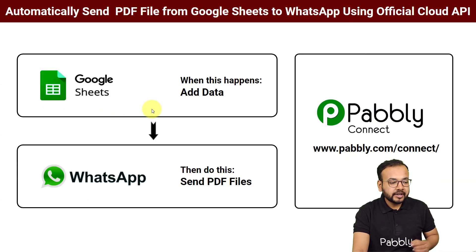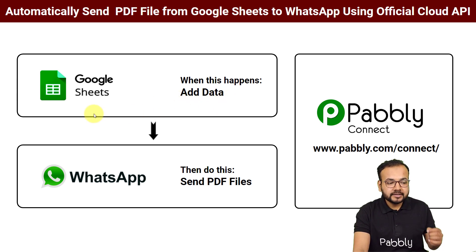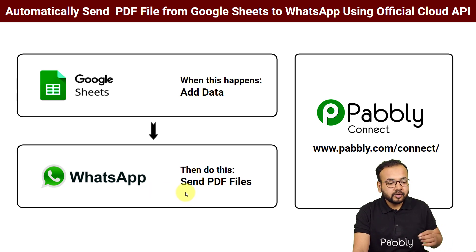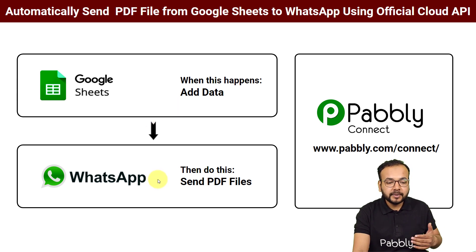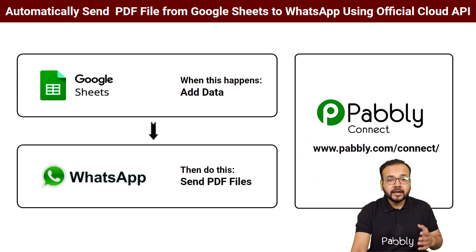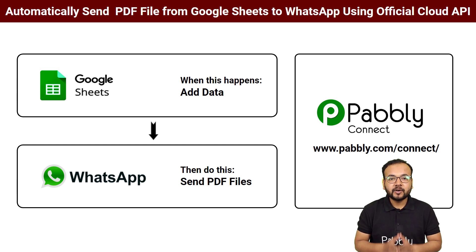This will be the flow of this automation. You just have to add the data of the PDF files and your customer here inside the spreadsheet in Google Sheets, and as you enter the data the files will be delivered to your customers on their WhatsApp automatically. This will save a huge amount of your time and energy. We are using Pably Connect, which is an integration and automation tool, and anyone can set up this automation easily without any coding skills or programming knowledge.